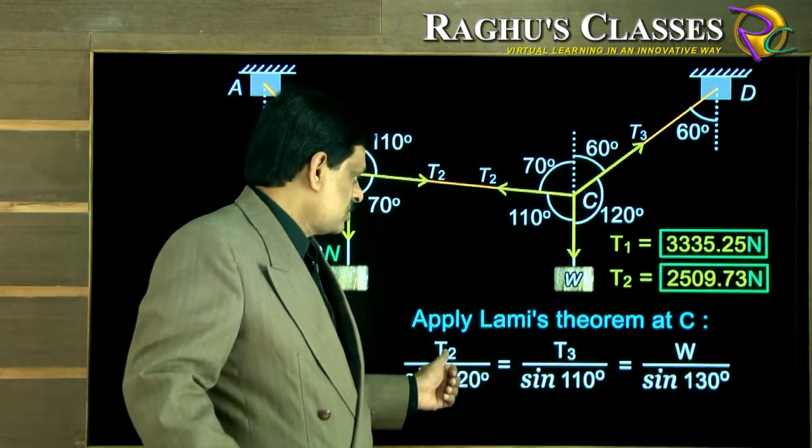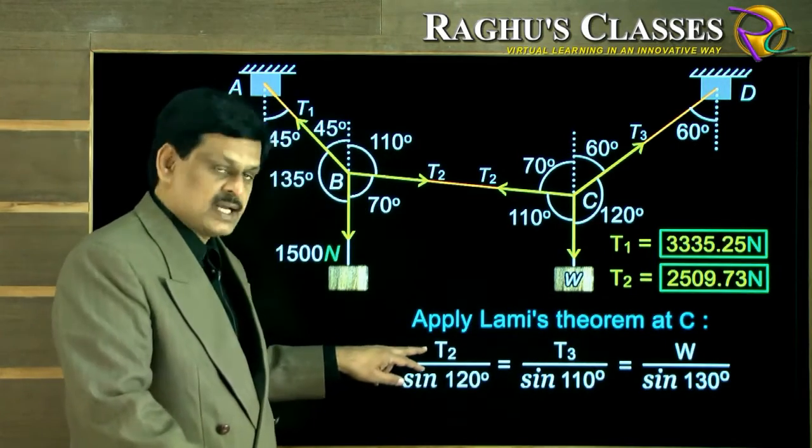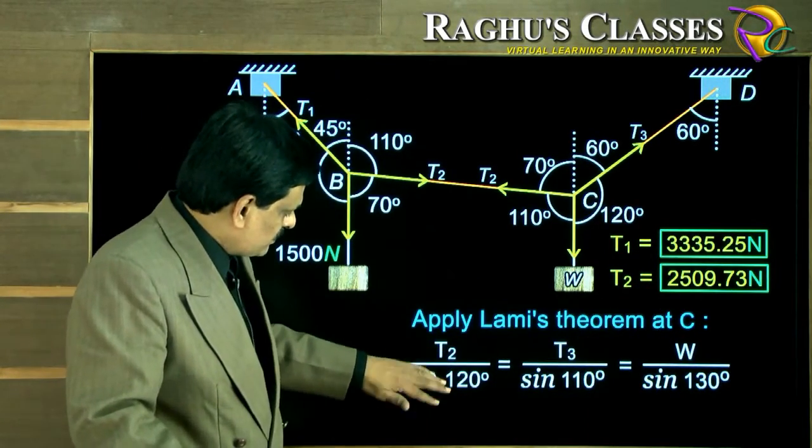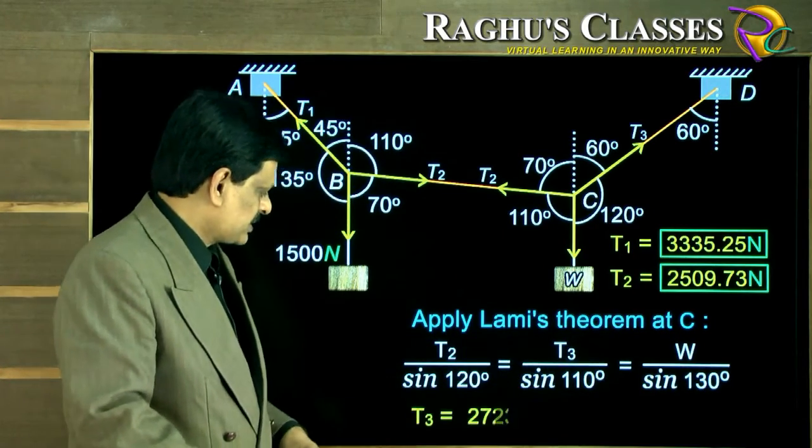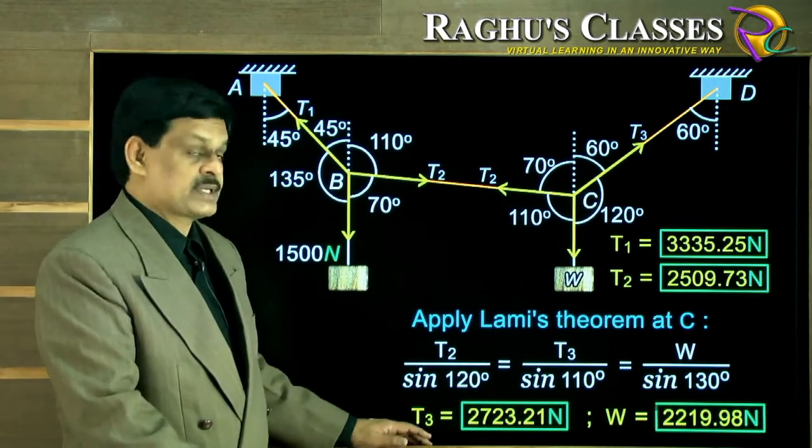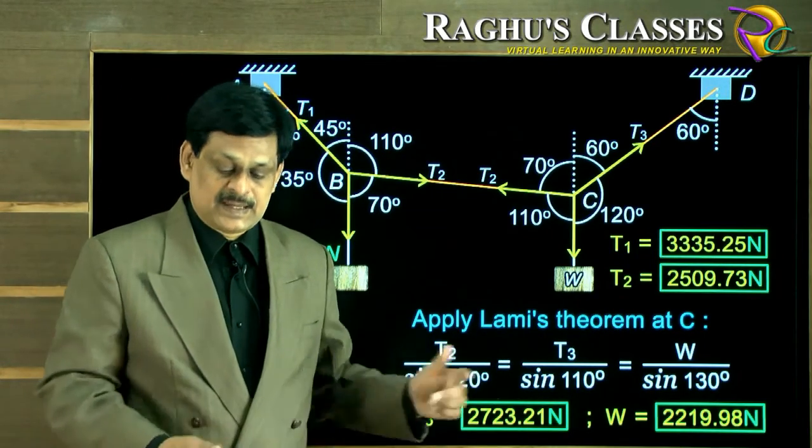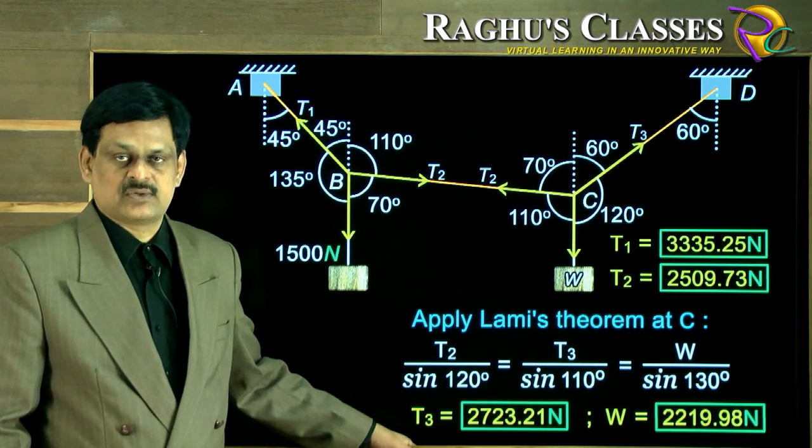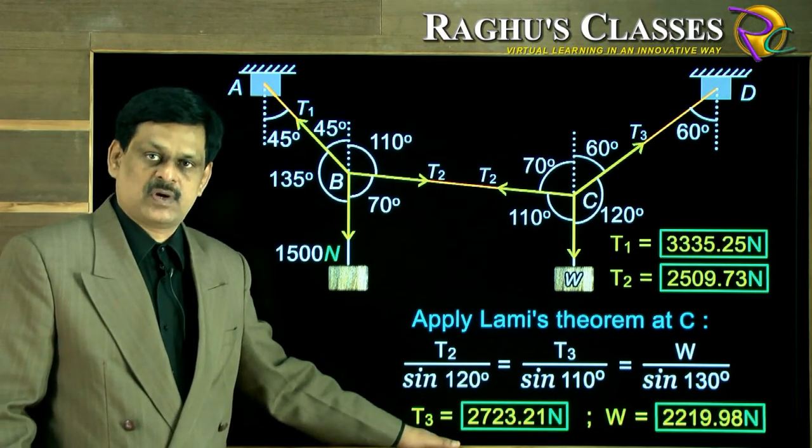So again, T2 is known. You can make use of this T2 here. I have not substituted, but you can take this here, so both are known. So equating this and this, the unknown can be estimated. Similarly, equating this and this, the W can also be estimated. So this is how we can apply Lami's theorem at the two junctions and find out the unknown forces in the strings as well as the unknown weight to be attached at the other point.